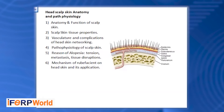Here we can see the mechanism of rubefacient on the head skull. Rubefacient is a topical application substance that produces redness of the skin by causing dilation of the capillaries and increases blood circulation. It is very helpful in growing new hairs by causing capillary dilation, further increasing blood circulation, which is very helpful for growing hair follicles.